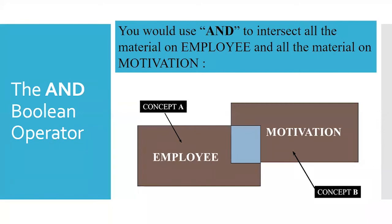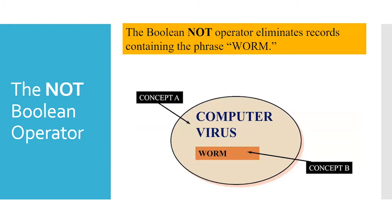When you use AND, you actually get fewer results than OR, which seems counterintuitive, but AND links the terms into one unit. So 'employee AND motivation' will only bring results that have both terms. You can use NOT to exclude a keyword — similar to using a minus sign in Google. For example, 'computer virus NOT worm' will exclude results about worms.